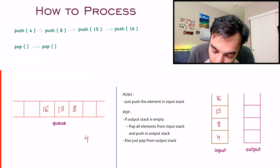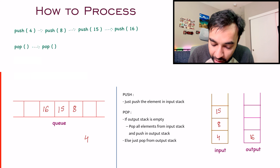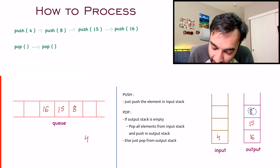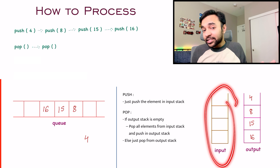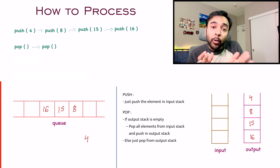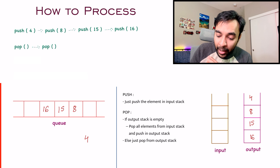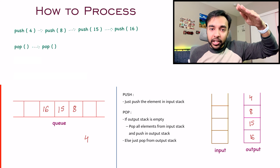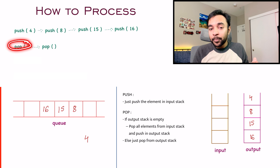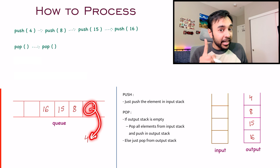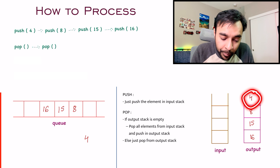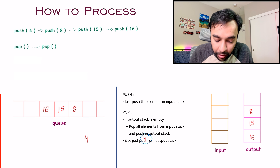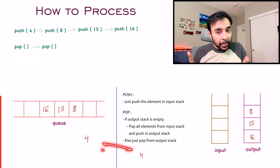Let us visualize it. You pop an element and it goes in your output stack. You pop the next element and it goes over here, then the next, and the next — you do this until your input stack is completely empty. Now you are ready to pop out an actual element. In my output stack I have reversed the ordering. So whenever someone says pop from your queue, from your stacks you will look at your output stack and pop out an element. When I pop out, I get 4. We were able to mimic the same operation.